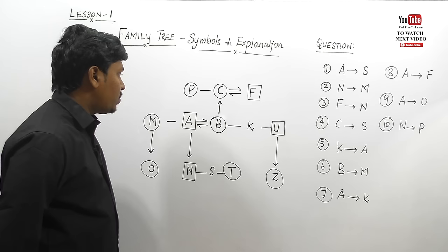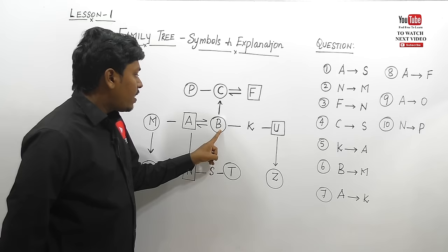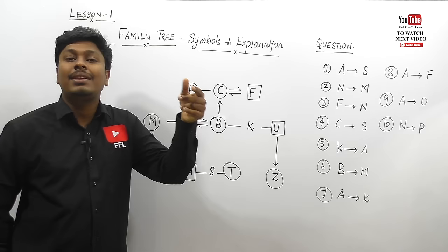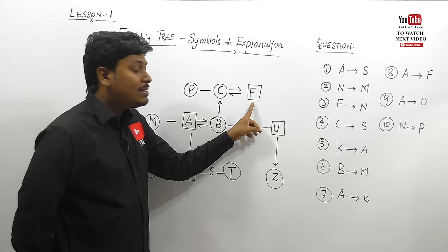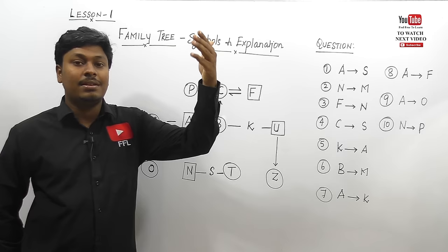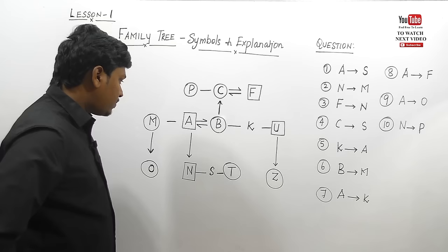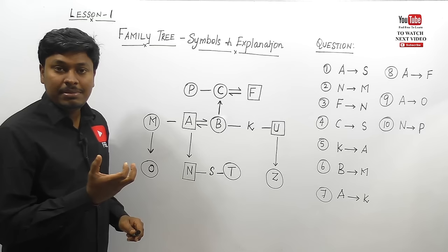Question 8: A to F — from A, what is the relation of F? A's wife is B, and B's father is F. Wife's father is called father-in-law. So A can call F father-in-law. The answer is father-in-law.